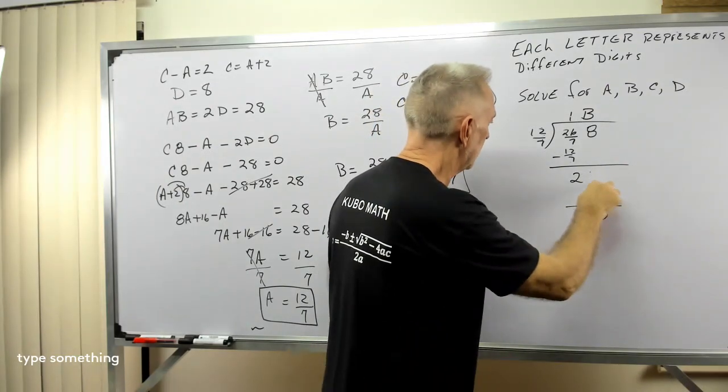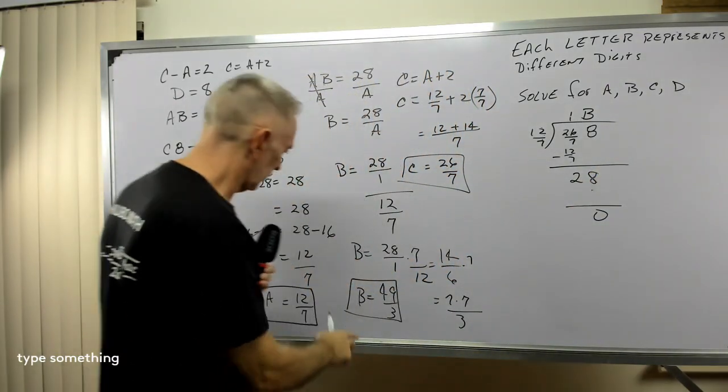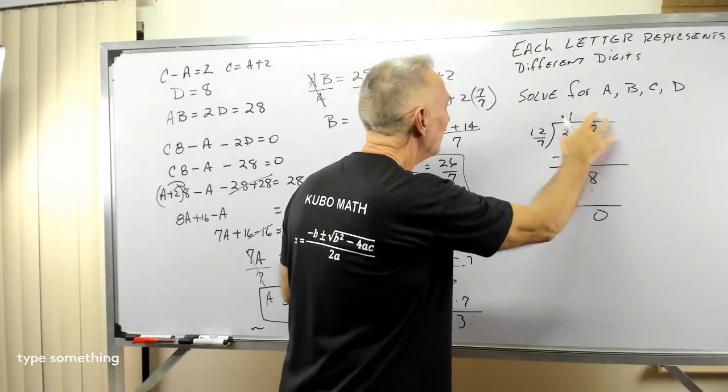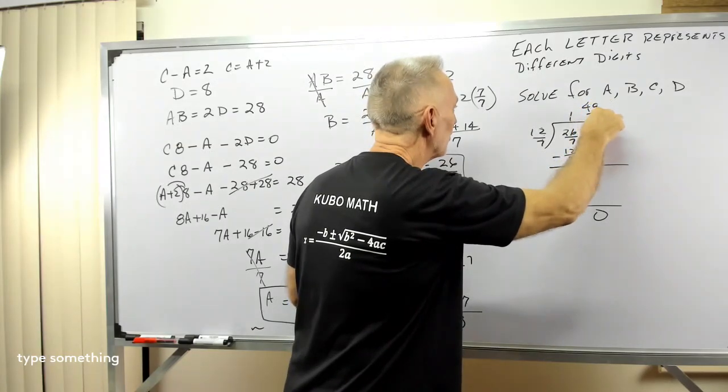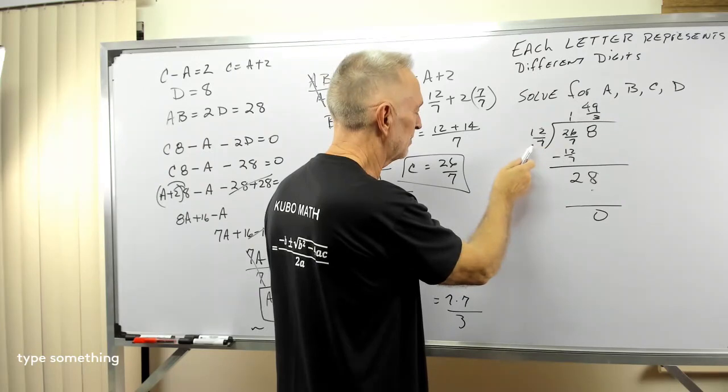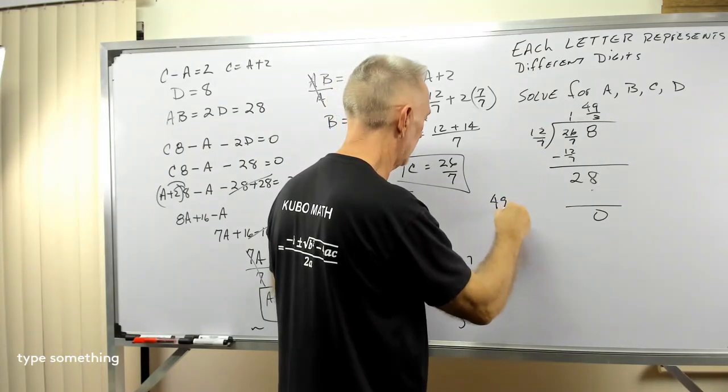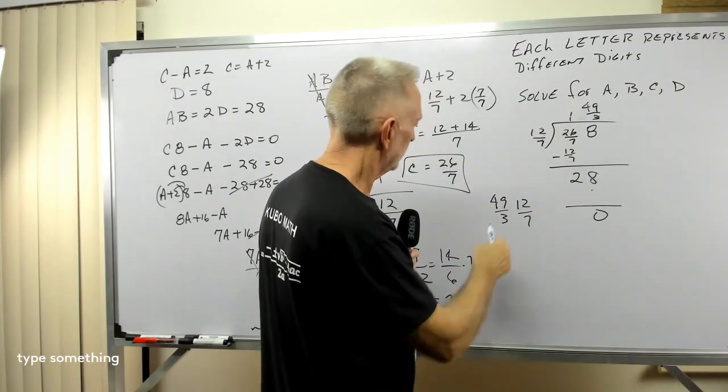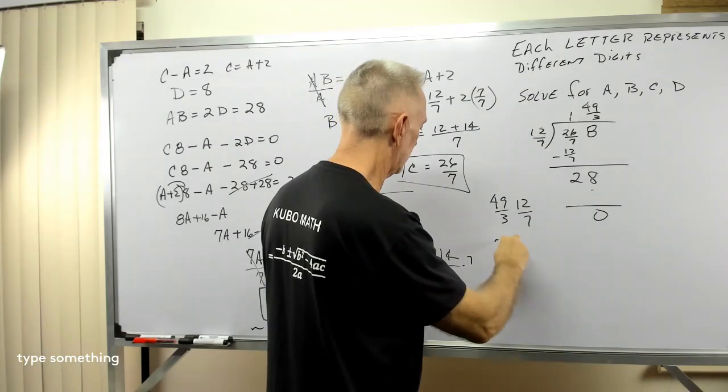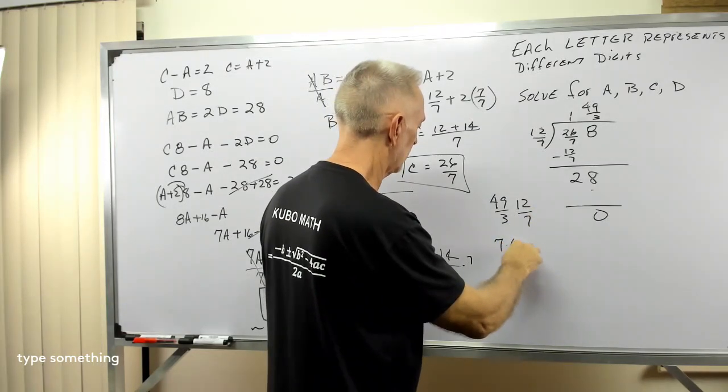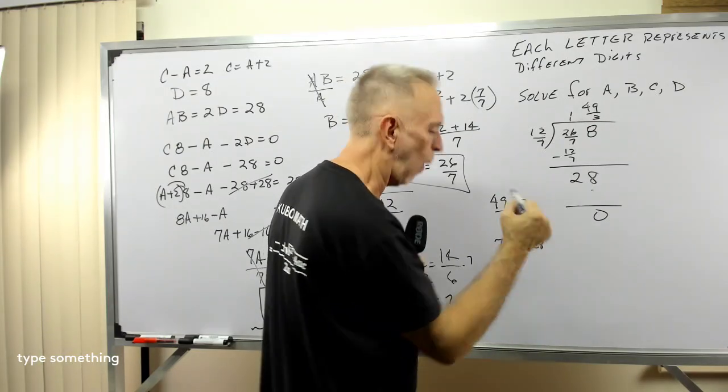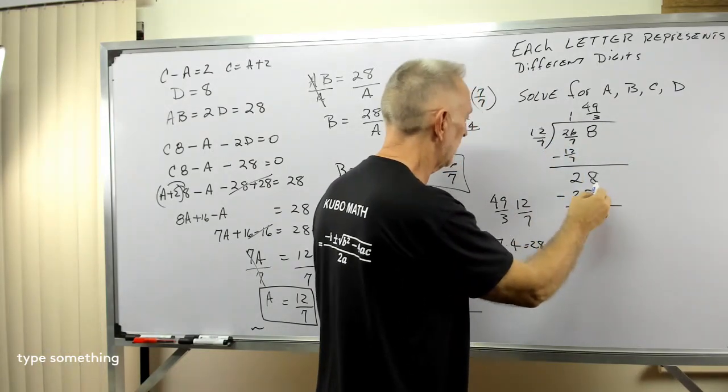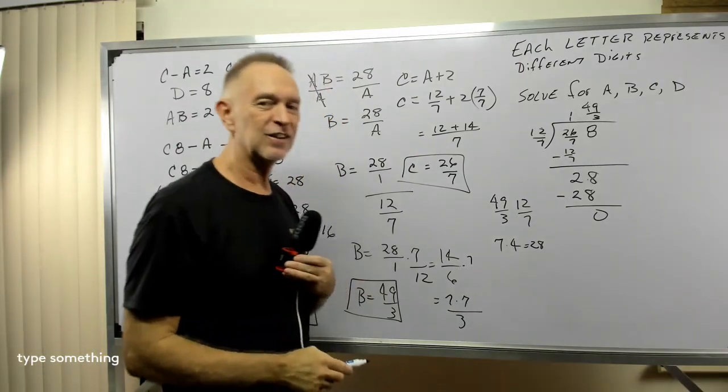D was 8. All right. B, what was B? 49 over 3. Okay. B, 49 over 3. And, we're going to multiply that times 12 over 7. So, 49 over 3 times 12 over 7. Well, 49 over 7 is 7. 12 over 3 is 4. 7 times 4 is 28. Whoa. All right. So, 49 over 3 times 12 over 7 gives me 28. 28 minus 28 is, in fact, 0. Whoa. All right. That was a good one.